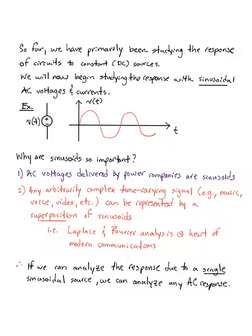We use sinusoids primarily when we talk about AC sources. There are other types of AC sources, which stands for alternating current, which just means that the source changes in time. Sinusoids specifically are useful because AC is how our power companies deliver power to us. Also, any arbitrarily complicated time varying signal can be represented by summation of sinusoids.